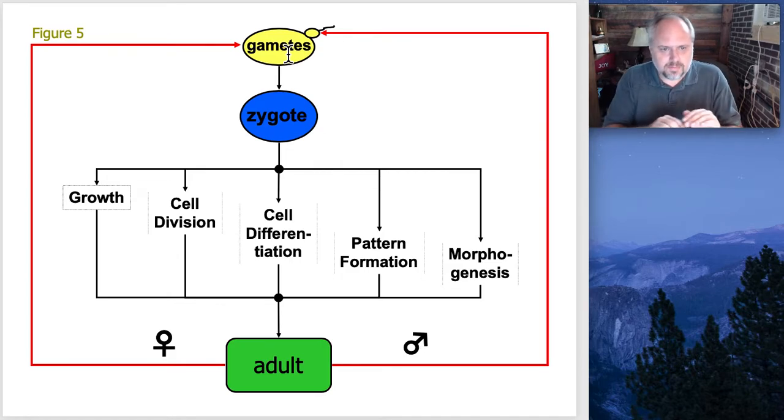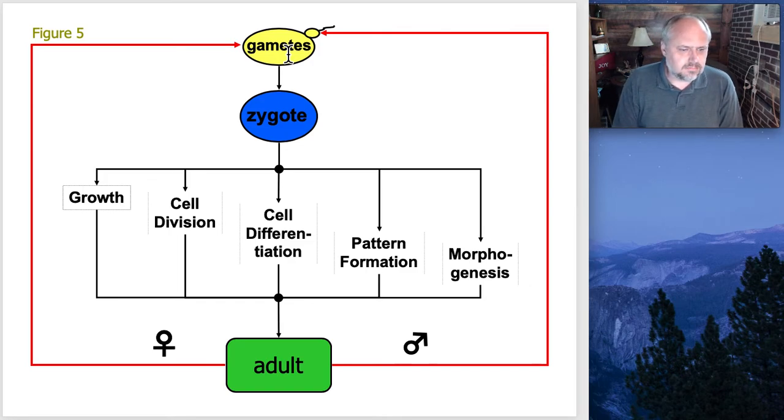We'll spend quite a bit more time on each one of these mechanisms. Obviously the growth, cell division and cell differentiation will be early here in the cell stuff and we'll save pattern formation and morphogenesis for later in the course when we talk a little bit more about the embryo as it develops later in the process.